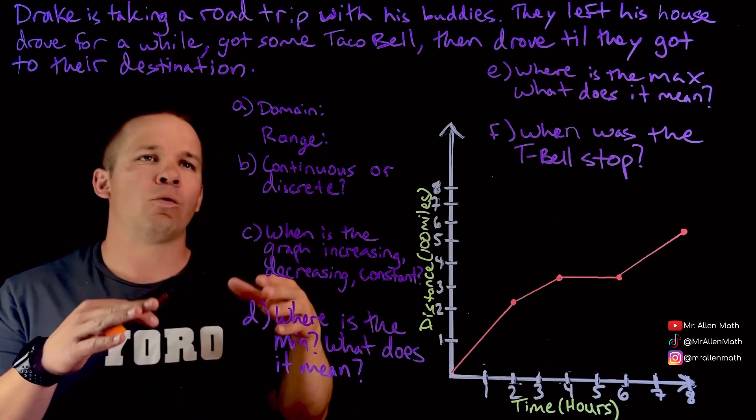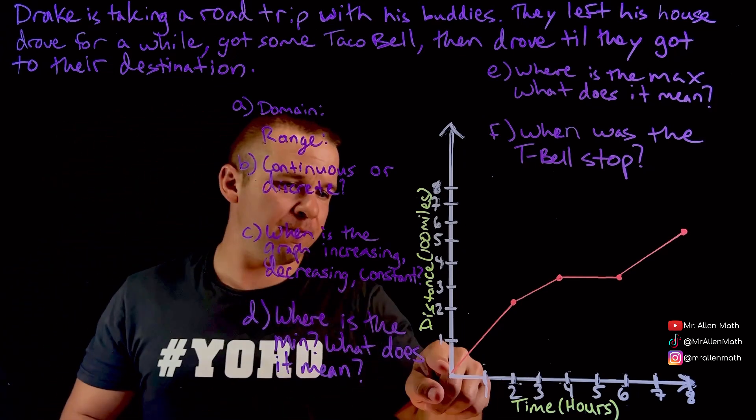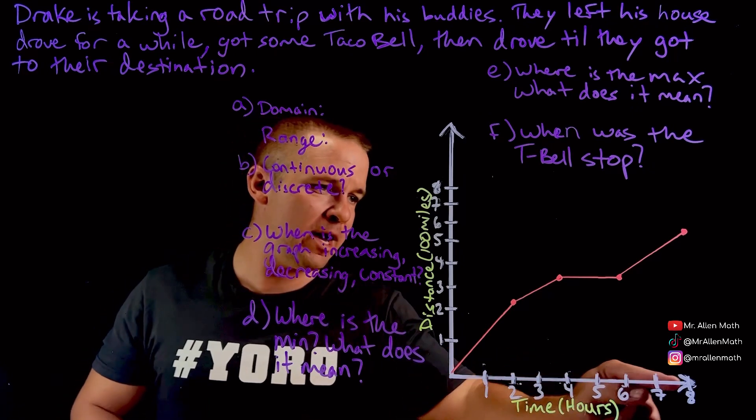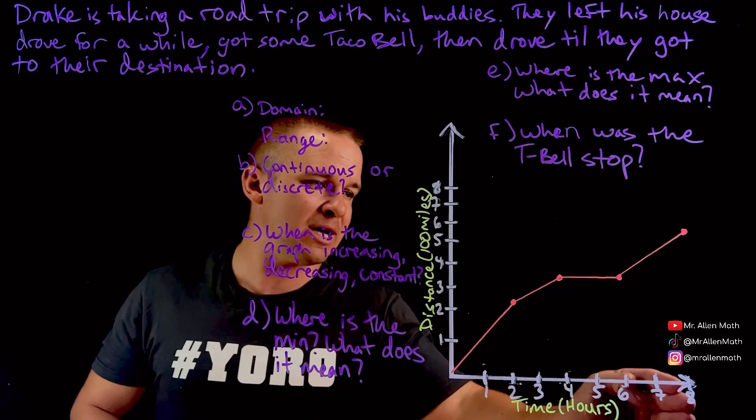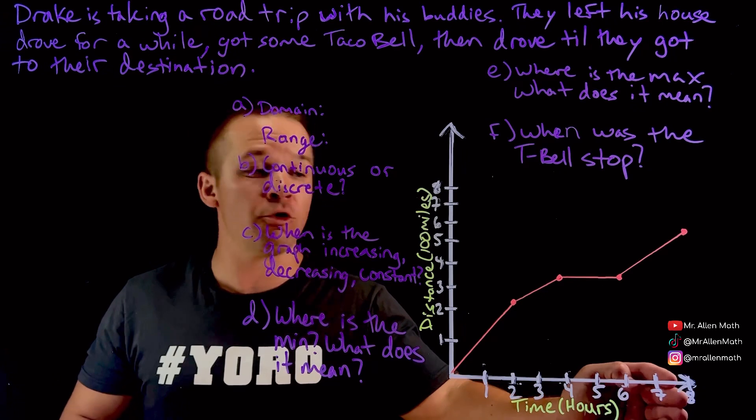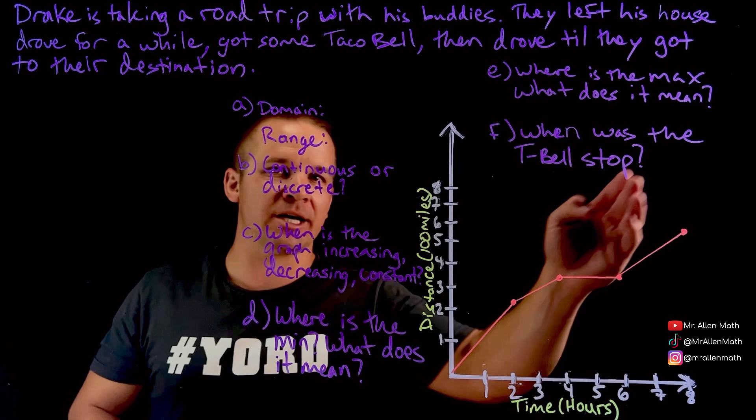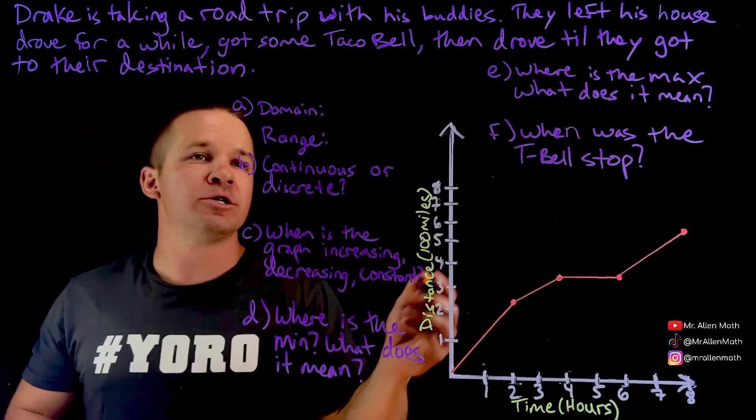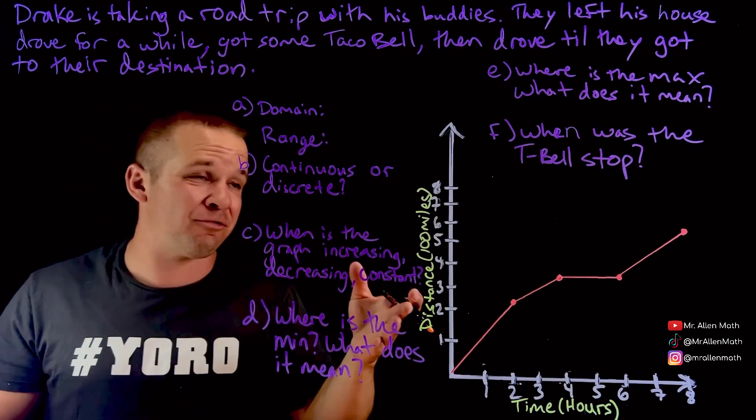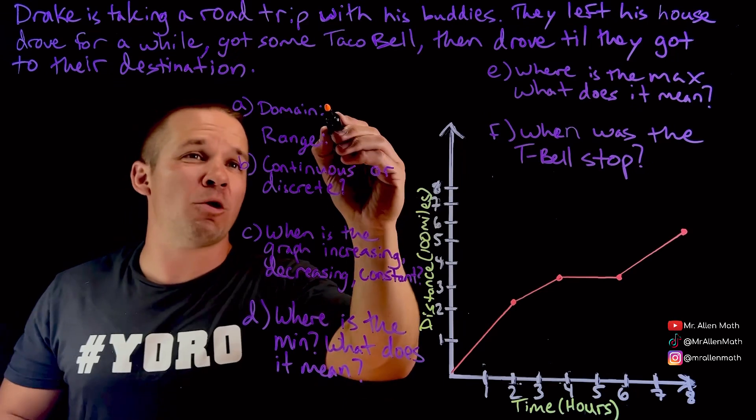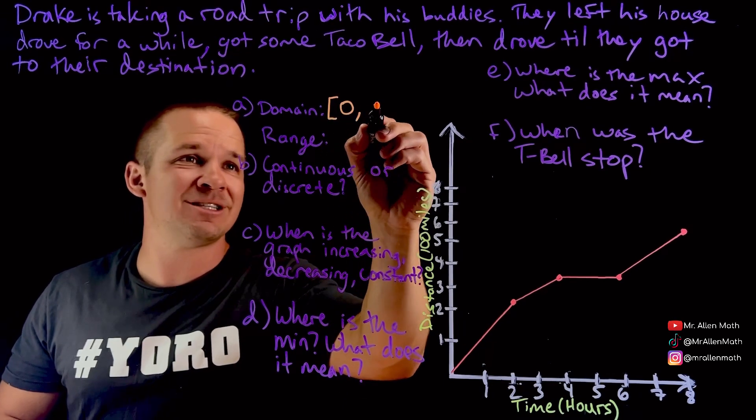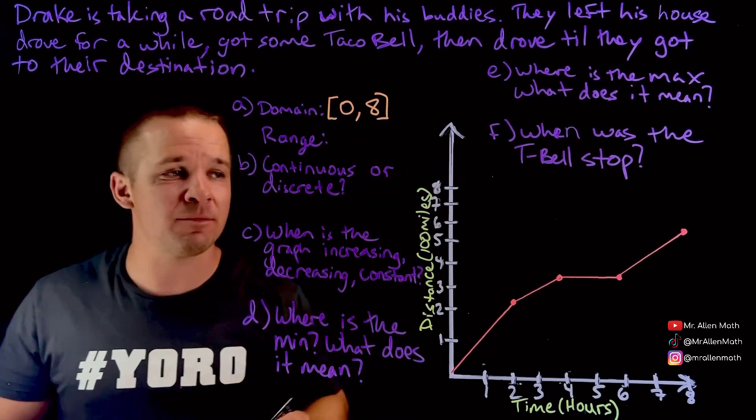Domain and range. So it looks like here we start, we go all the way for our domain here, which is time. That'd be our x variable, right? Normally, in this case, t probably. From zero hours to eight hours is where it looks like it stops. So it's an eight-hour road trip. So we could go with from zero to eight, right? Something like that.